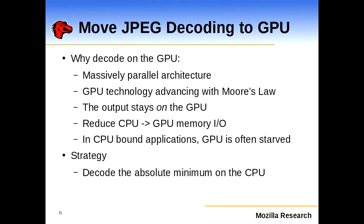So why do we want to decode images on the GPU? There are many reasons. First, it's a massively parallel system — modern GPUs have up to 48 execution units, each with the potential to do SIMD operations. GPUs are continuing to advance with Moore's Law, so any work done to develop GPU image decoding algorithms should expect to get better over time. Also compelling: the output from image decoding stays on the GPU, so once you've decoded it, it's already in the right place.